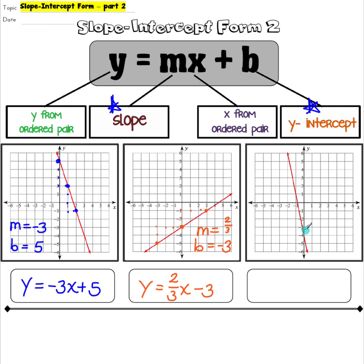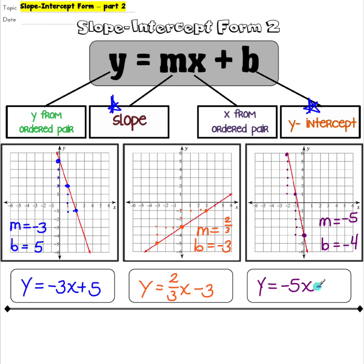Lastly, our y-intercept is at negative four. For our slope, here's a point and another point here, so we go down five and over one — and just to verify, down five and over one again — giving a slope of negative five. We write this as y equals negative five x minus four.